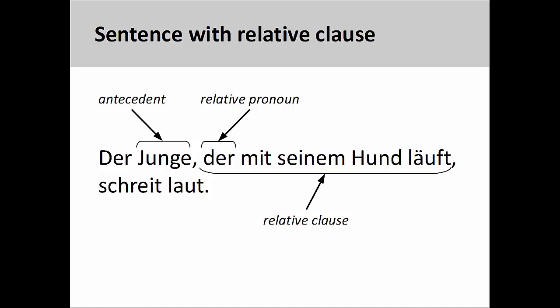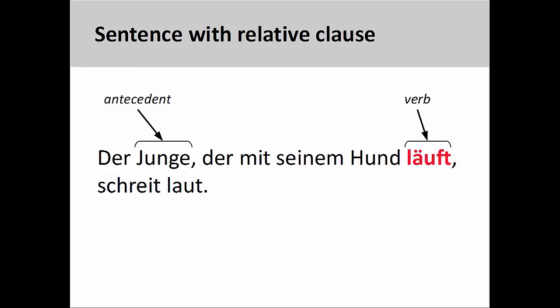The relative clause is connected to the antecedent by means of the relative pronoun 'der,' who. You will also remember that a relative clause will be set off from the rest of the sentence by commas. As the relative clause is a type of subordinate clause, the third-person singular present tense verb 'läuft,' runs, comes in the final position at the end of the clause.